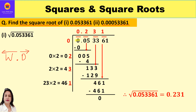In this number, the whole number part is only 0 — that is one digit, so the first period is 0. After the decimal point we have 0 5 3 3 6 1. The total number of periods we have got is 4. This means the total number of digits in the square root of this number will also be 4. Remember: the number of periods defines the number of digits in the square root.